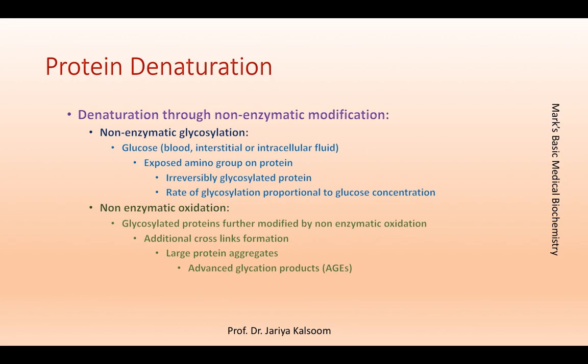In non-enzymatic glycosylation, glucose present in blood, interstitial tissue, or intracellular fluid binds to an exposed amino group on a protein. This two-step process forms an irreversibly glycosylated protein. Proteins that turn over very slowly in the body, such as collagen and hemoglobin, exist with a significant fraction in glycosylated form. Because the reaction is non-enzymatic, the rate of glycosylation is proportionate to the concentration of glucose present, and individuals with hyperglycemia have much higher levels of glycosylated proteins.